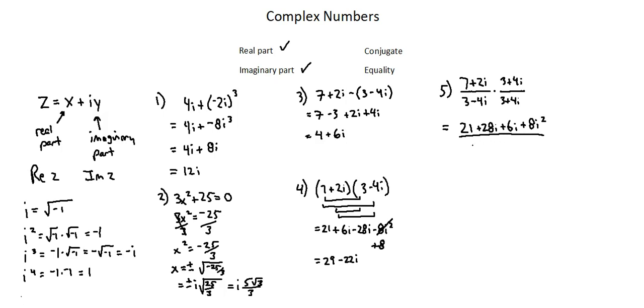In the denominator, three times three is nine. Three times four i is 12 i. Negative four i times three is minus 12 i. And negative four i times four i is negative 16 i squared. Notice that the middle two terms offset. This always happens when you multiply a complex number by its conjugate. We're trying to remove the imaginary part of the denominator. Multiplying by the conjugate achieves that result.